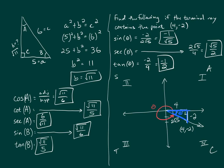To use this method, plot the point on a coordinate plane, then go vertically back to the x-axis to create a right angle, forming the triangle with the origin. Keep the sign of the ordered pair values — positive 4 and negative 2 — as the two legs of the triangle. The hypotenuse, or radius, is always positive.